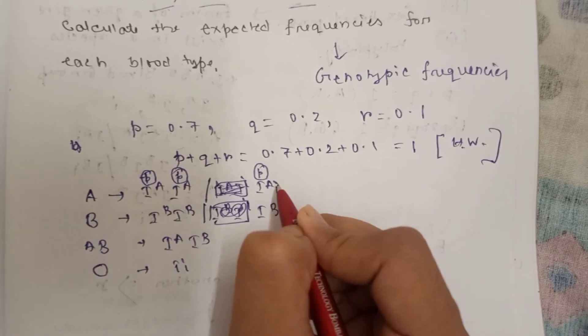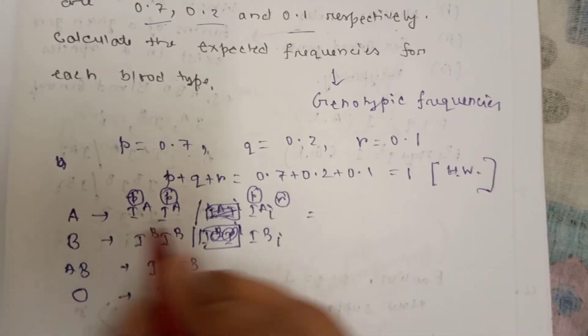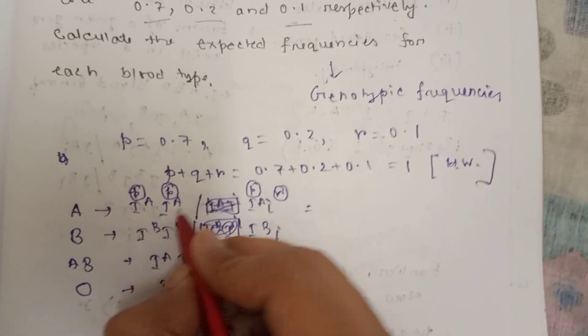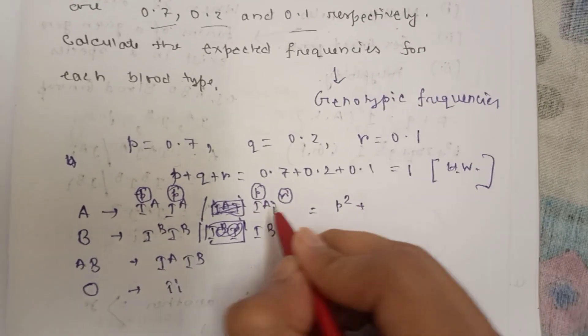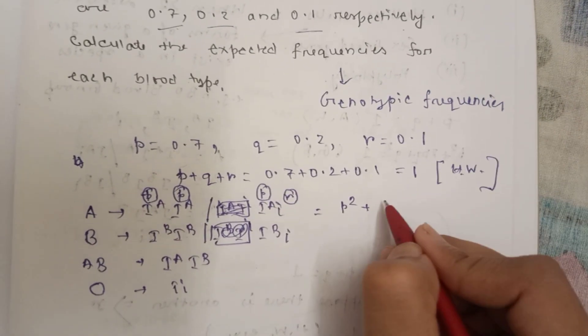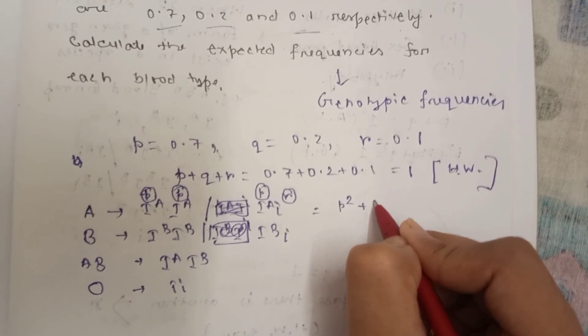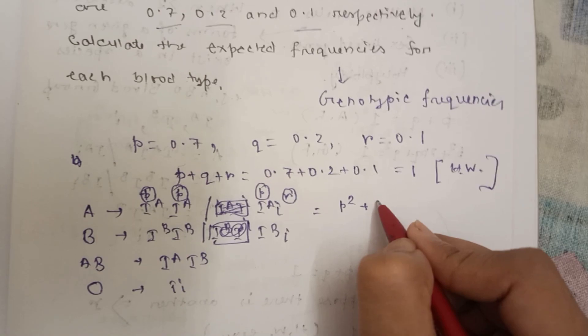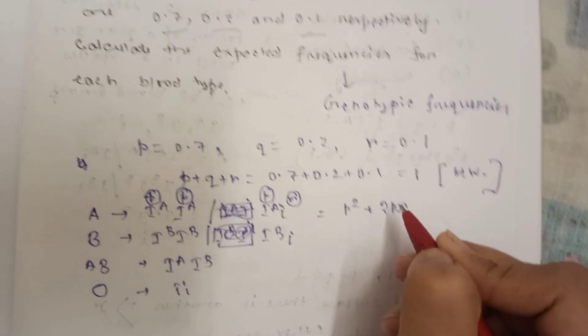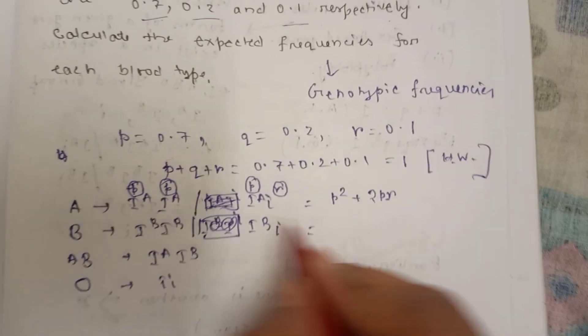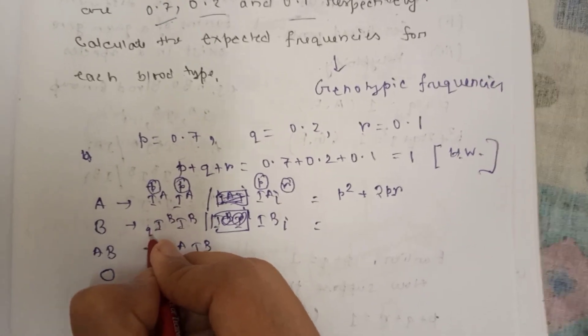I^A and small i, I^A is p and small i is r. So I^A and small i, it's pr but remember the heterozygotes will be 2pr. Similarly, I^B I^B, I^B is q, so q into q that is q square.